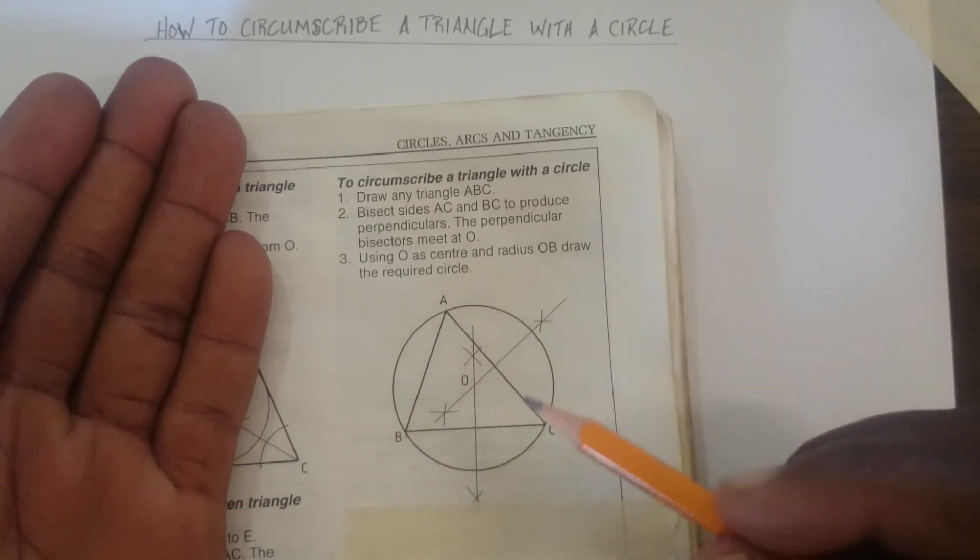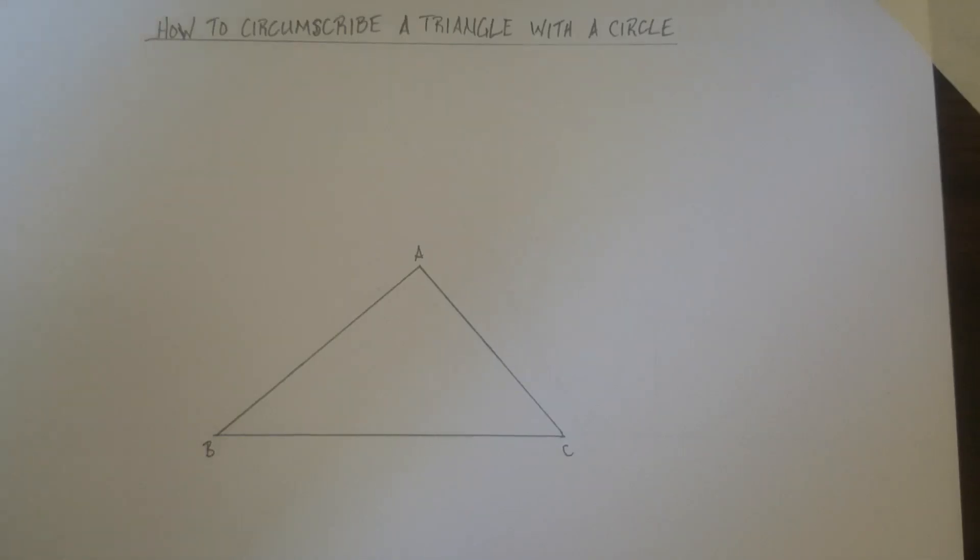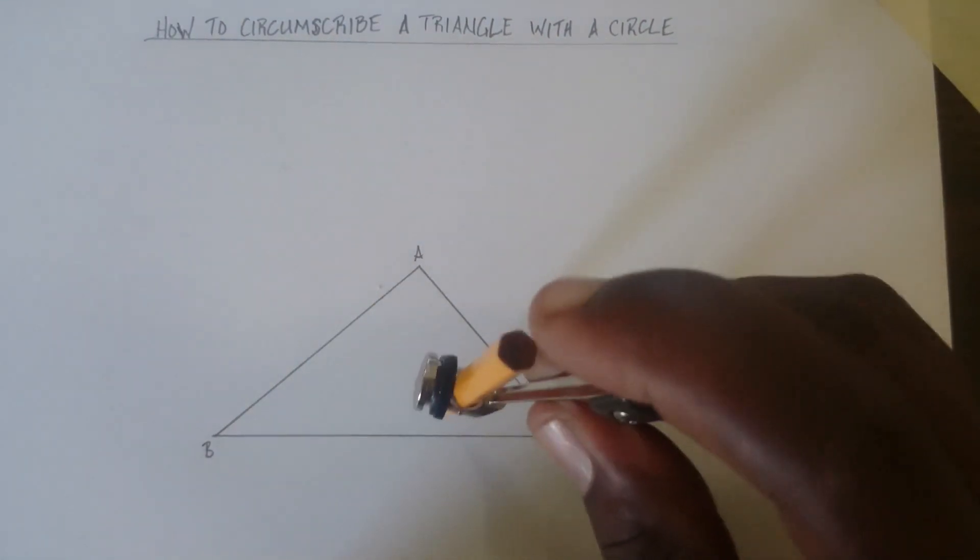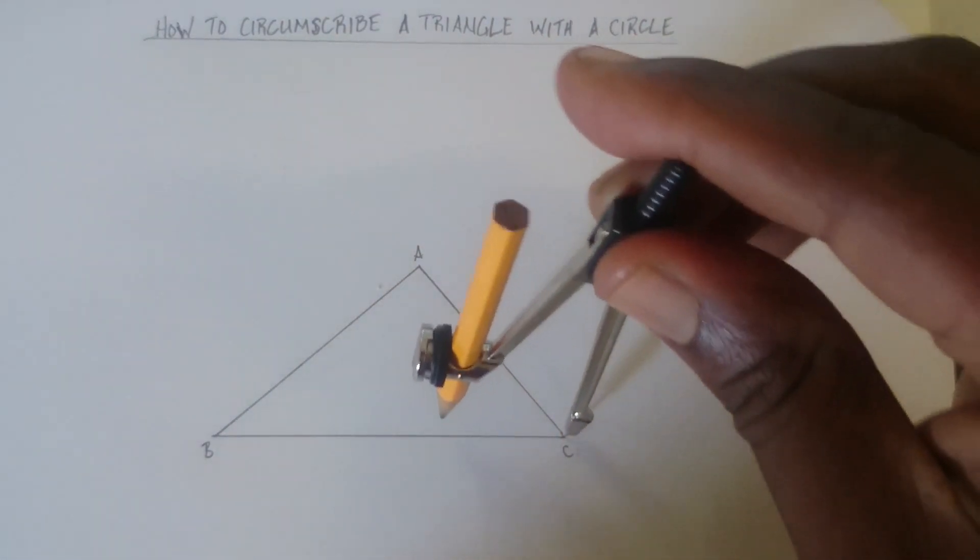And that's going to be the center of your circle. It's very easy. Alright, so let's do that. To bisect a line, and it's going to be BC, you open your compass to more than half, a little more than half.